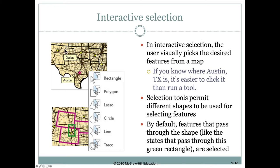In an active selection, we're putting our cursor on the map and selecting by tracing a rectangle, polygon, or other shapes. This example shows a shape traced in green by clicking on two different corners, which creates a rectangle. In this case, we're selecting the states that have any portion within this rectangle, and we can see the three states that were selected.